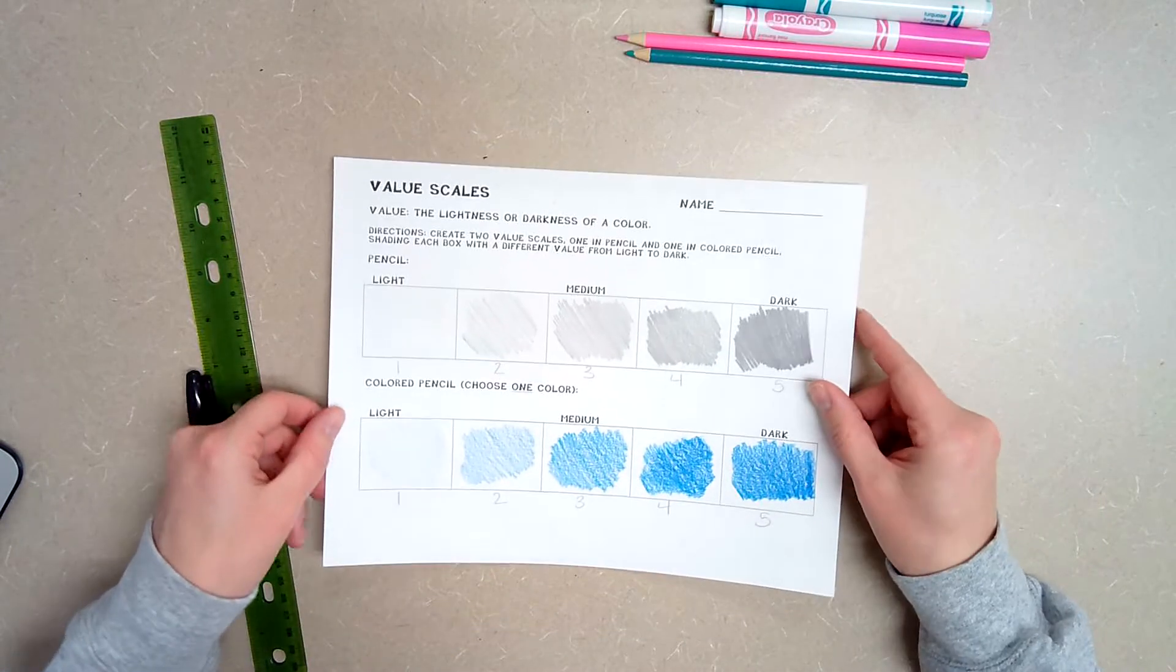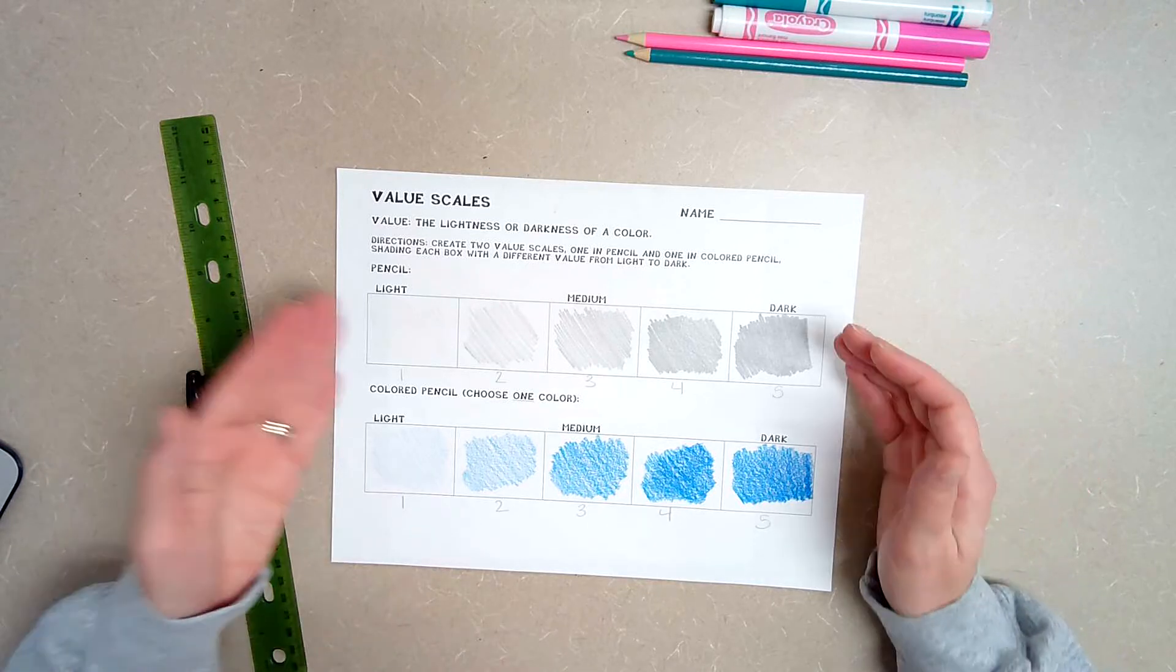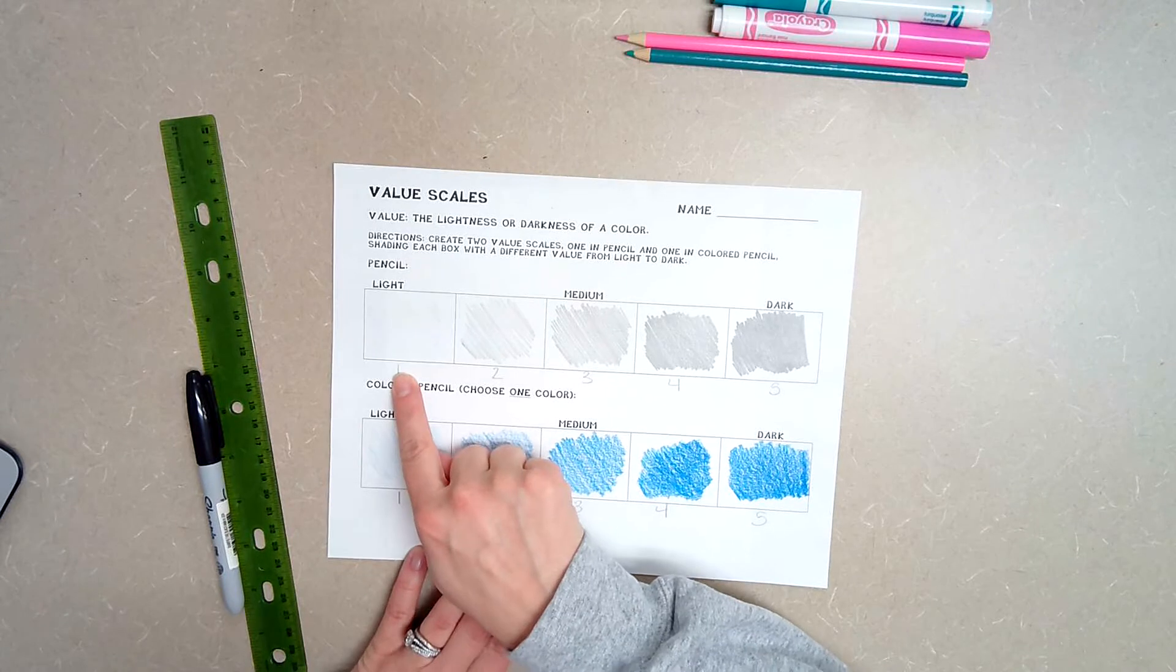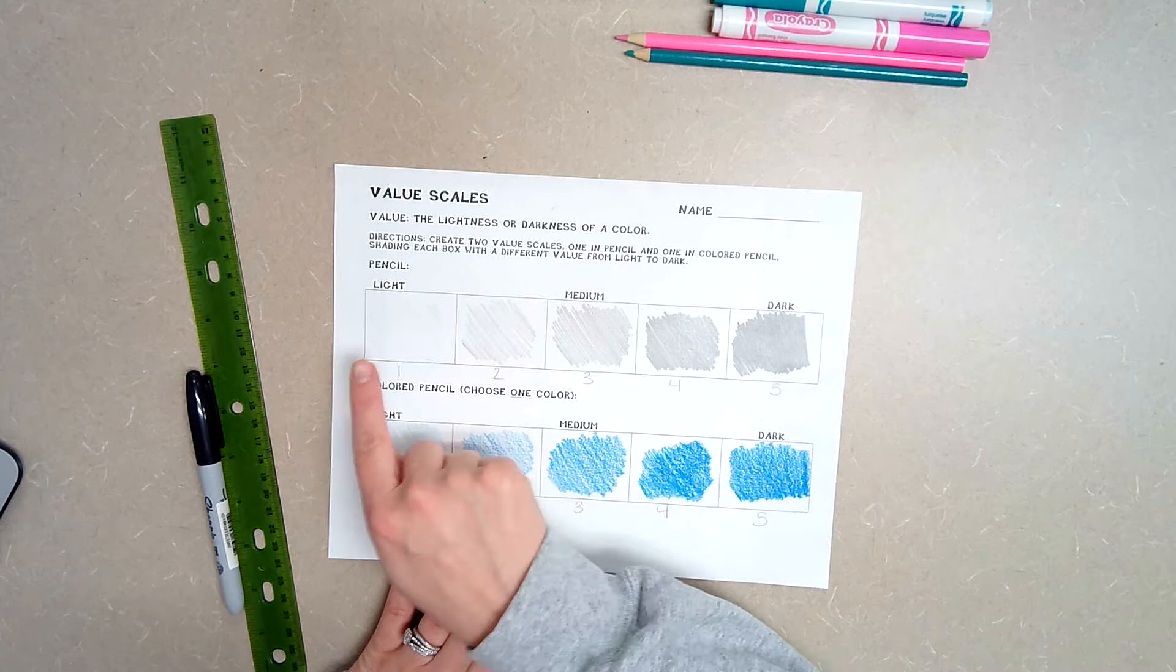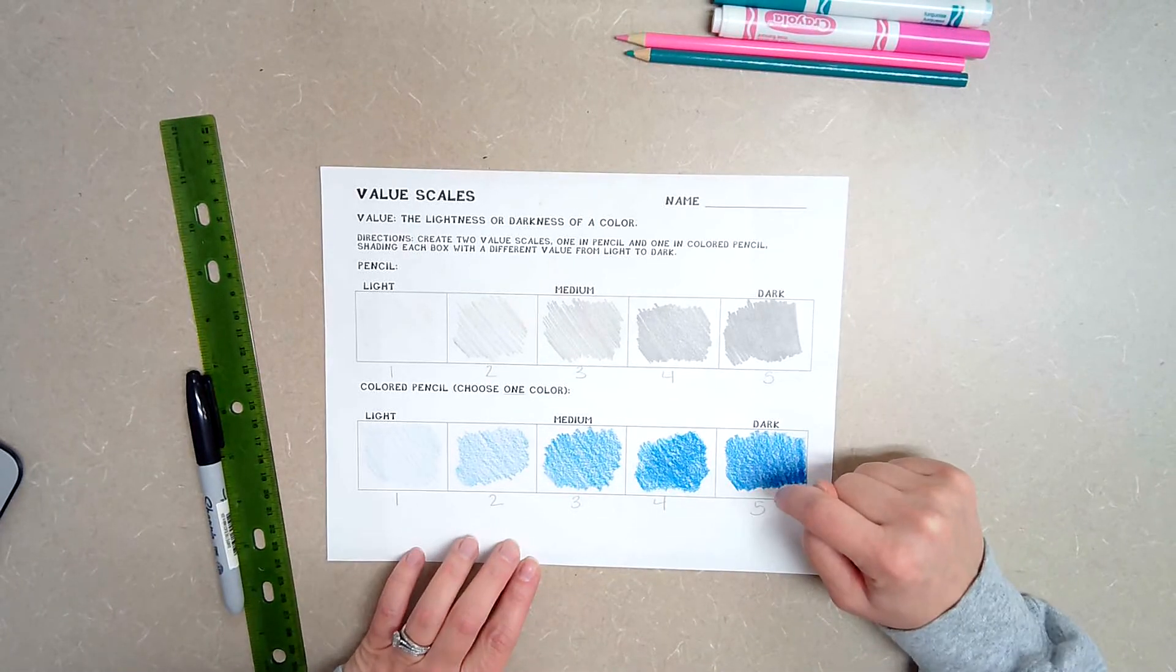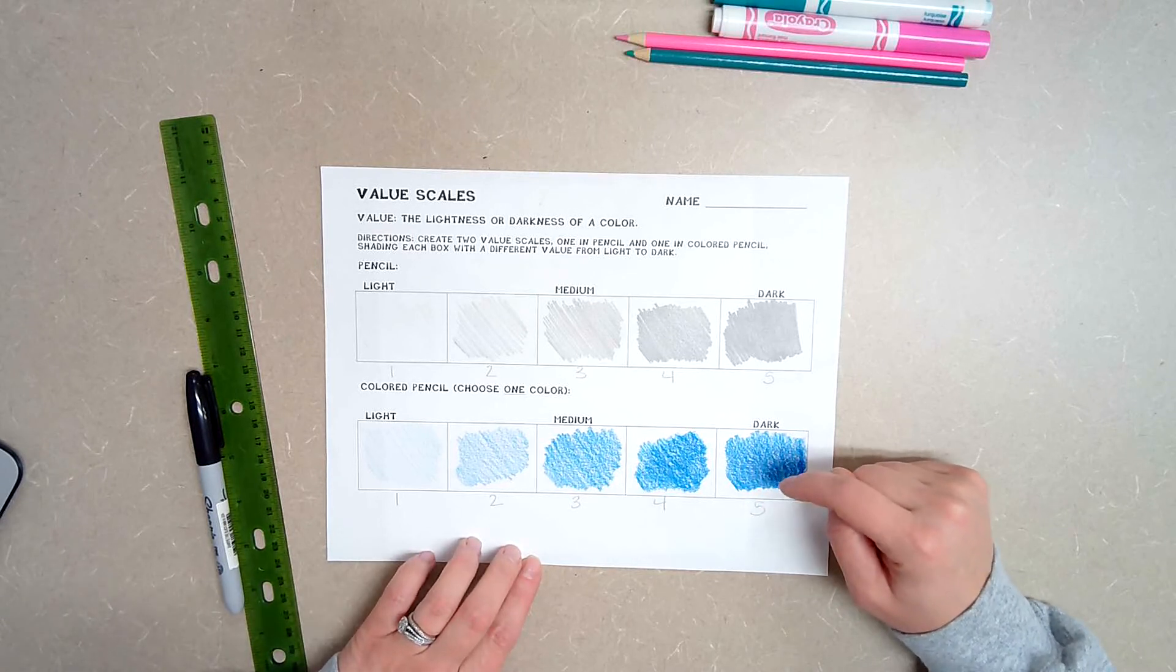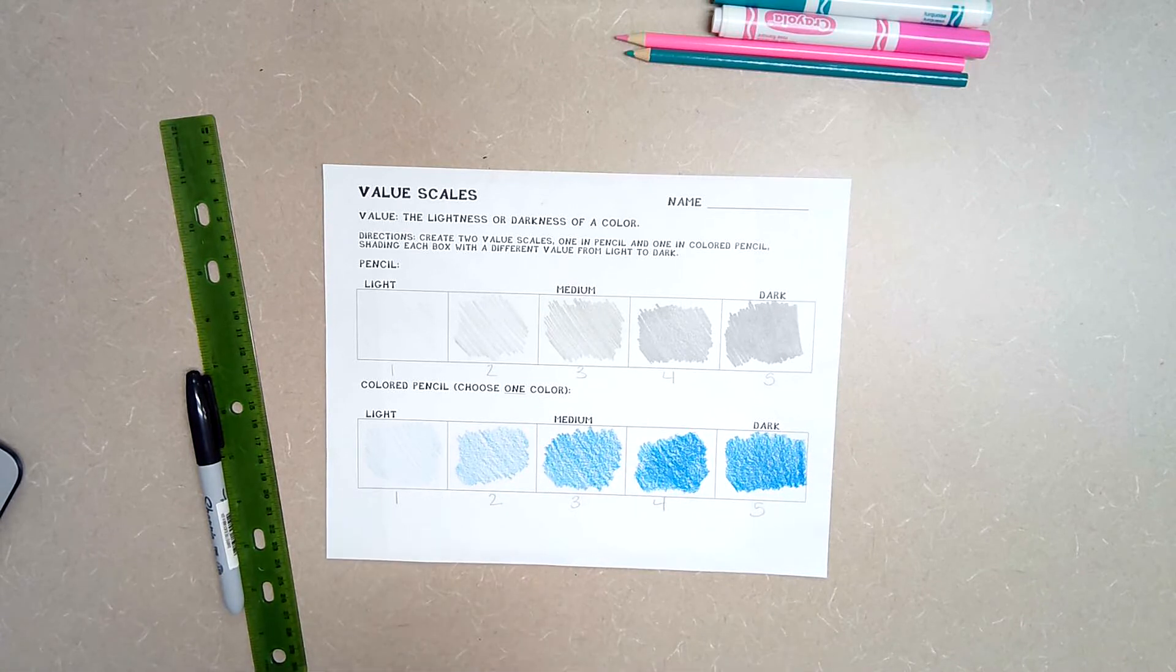Now you were previously working on value scales in practicing dark to light or light to dark. One being the lightest, five being the darkest. I had you do this exercise with pencil first and then with colored pencil. Today we are going to be using colored pencil and marker. Obviously you can't do a value scale using marker so we are just going to be using value with the colored pencil parts.